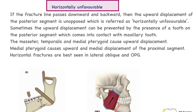An important point regarding horizontally unfavorable fractures is which muscle is responsible for the upward displacement. This is mainly attributed to the medial pterygoid, which is a powerful jaw elevator responsible for the upward movement of the jaw, and therefore also responsible for the upward displacement caused in this case.